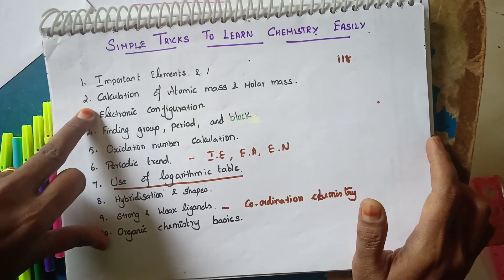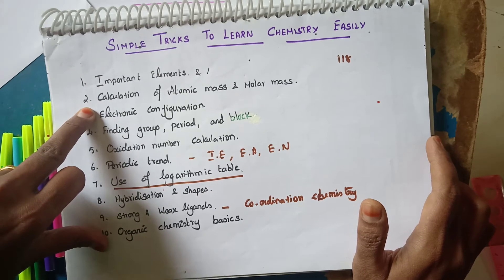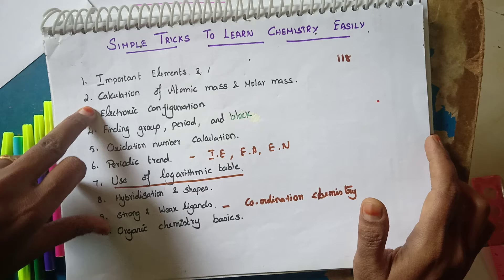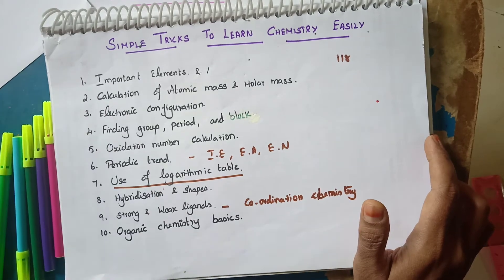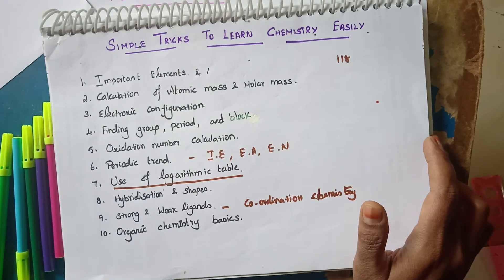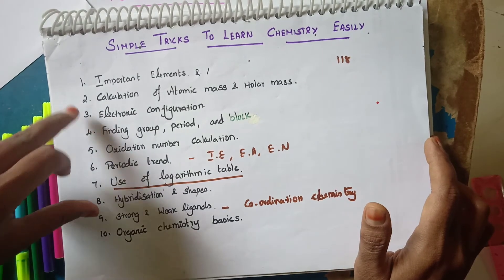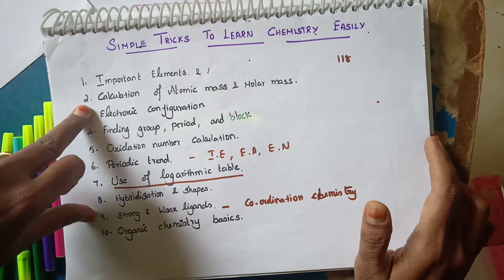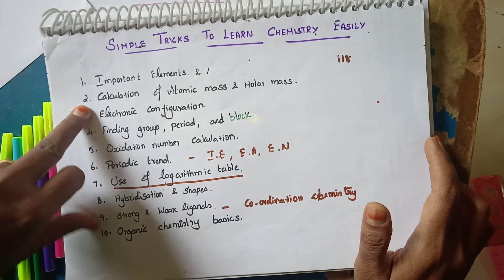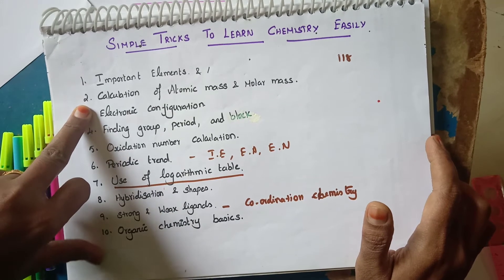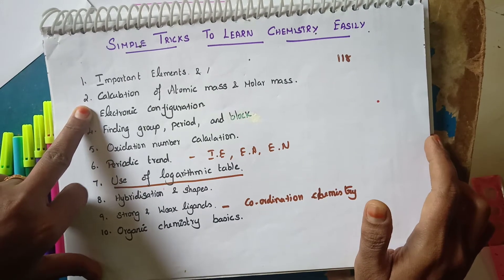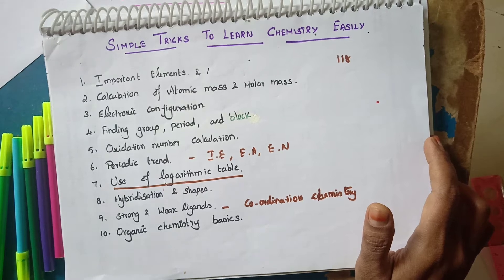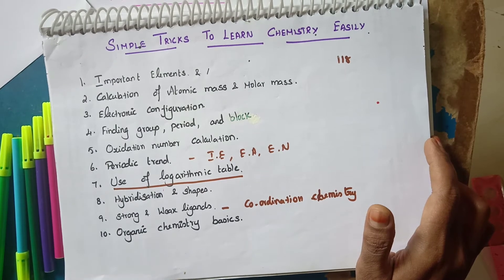The next basic is calculation of atomic mass. For those important elements, you should know the atomic mass clearly. Without knowing the atomic mass, you cannot do calculations properly in chemistry.